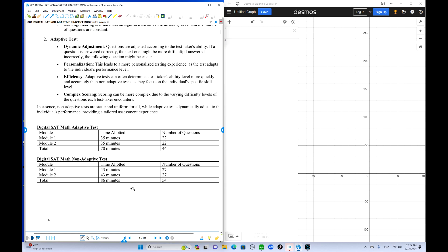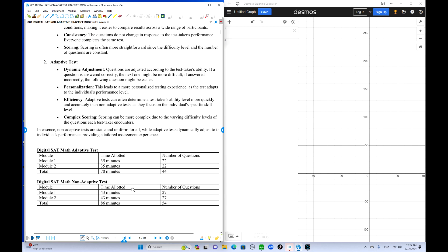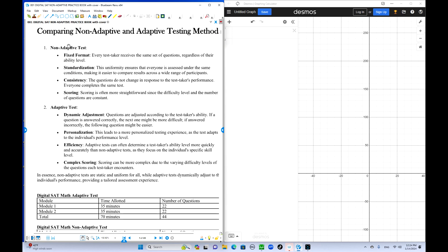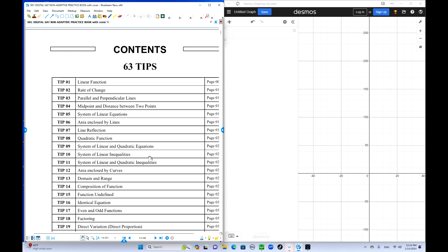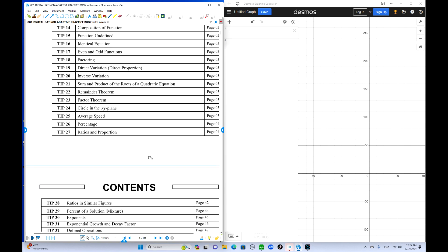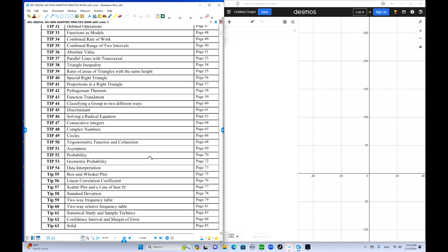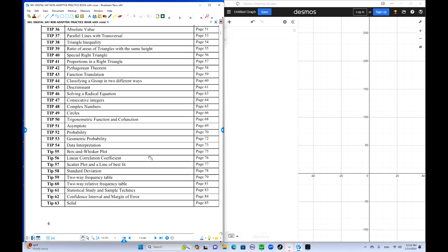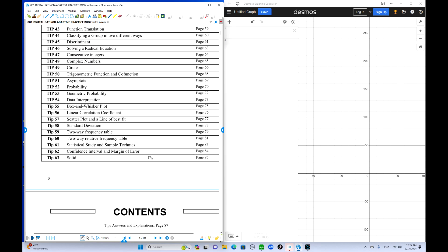But to prepare this adaptive test, we need this one, non-adaptive test. Because this book is designed to solve any difficult questions on the SAT. There are many explanations. This is the contents. There are 63 tips. So we can take a look over here. A lot of tips, they are all very important for the test. So you need to go over all of these tips, 63.